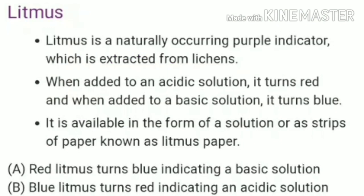The best natural indicator is litmus paper, which we use very often in lab tests. Litmus is a naturally occurring purple indicator extracted from lichen. When added to an acidic solution it turns red, and when added to a basic solution it turns blue. It is available in the form of solution or as strips of paper known as litmus paper.